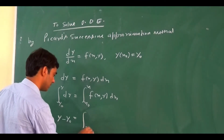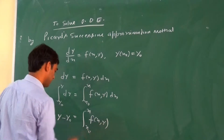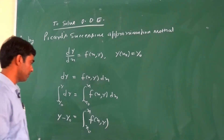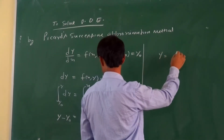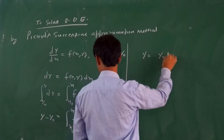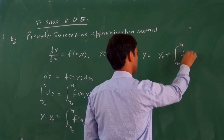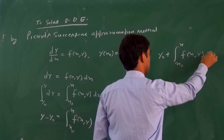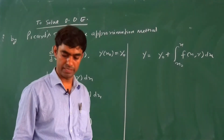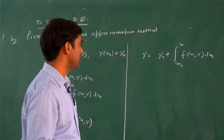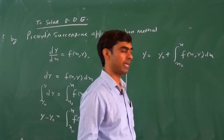So we write: y = y₀ + ∫(x₀ to x) f(x, y) dx. This is known as an integral equation. We cannot integrate this without knowing the value of y in terms of x.